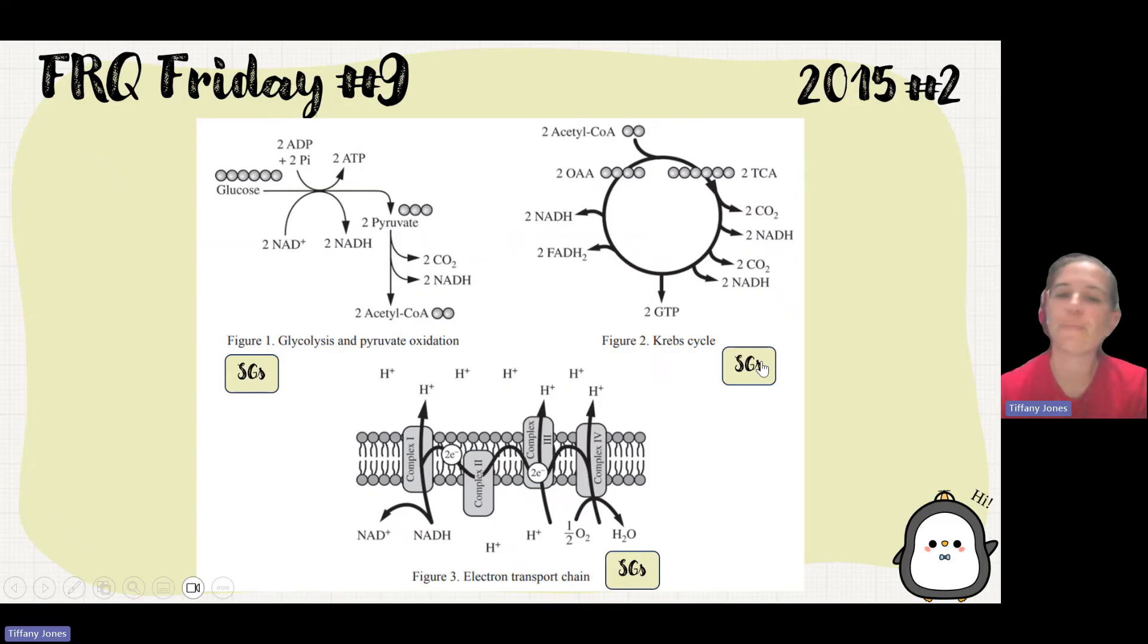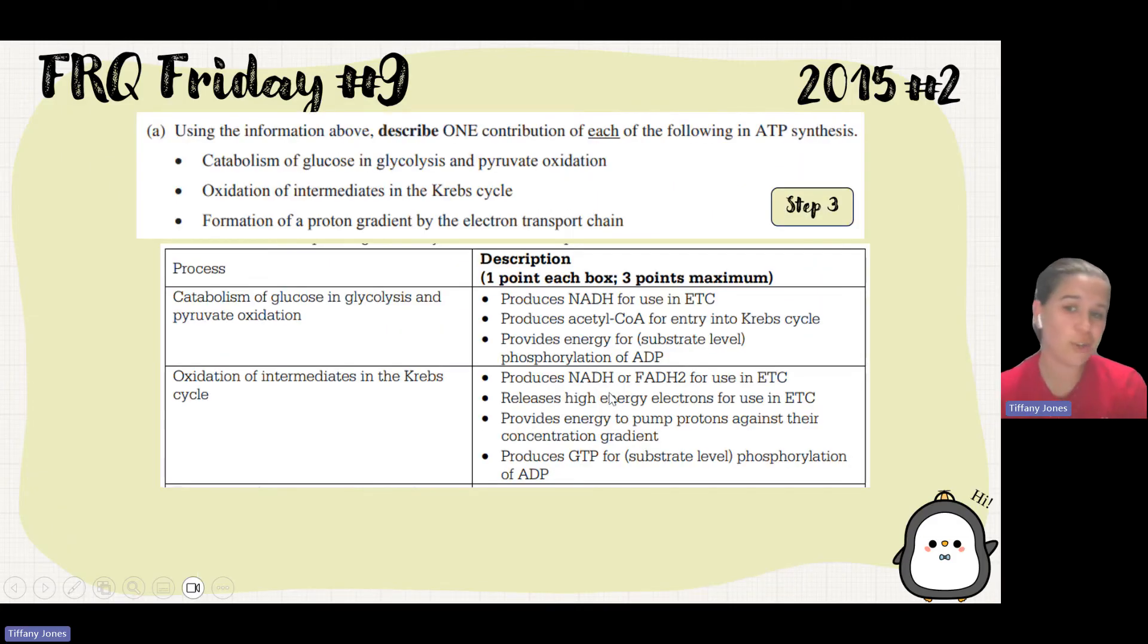Let's look at the options. We have produces NADH or FADH2 for use of electron transport chain, releases high-energy electrons for use in ETC, provides the energy to pump the protons against their concentration gradient, and then of course produces GTP by substrate level phosphorylation.